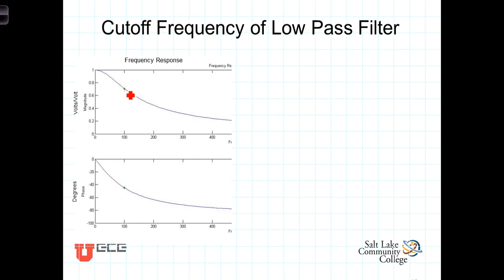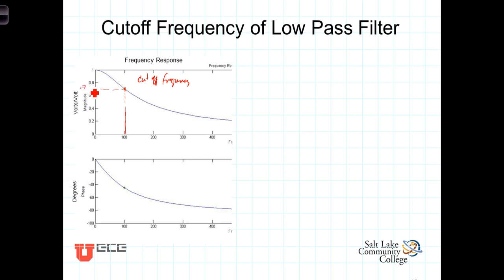We now want to formally define what we mean by the pass band and the stop band. In this low-pass filter, signals that oscillate within frequencies below a certain frequency are passed, and we call the boundary point the cutoff frequency. We're going to define the cutoff frequency as the frequency where the magnitude of the frequency response function is equal to 0.707, or 1 over the square root of 2, times the maximum value. For a low-pass filter, the maximum value occurs at DC, or omega equals 0, and in this case the maximum value is 1.